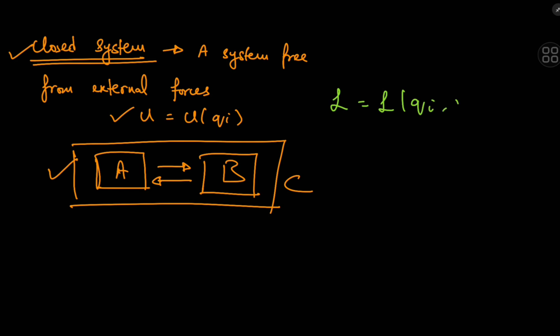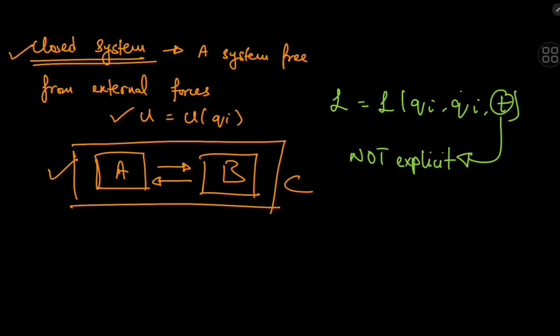The analysis starts by writing the Lagrangian as a function of the generalized coordinates, generalized velocities, and time, and noting that the dependence on time is solely due to the dependence of those coordinates and velocities on time — in other words, the dependence on time of the Lagrangian is not explicit. If it were explicit, the laws of mechanics governing the motion of a system would change in form with time. So it follows logically that the Lagrangian should not contain time explicitly, meaning the partial derivative of the Lagrangian with respect to time is always zero.